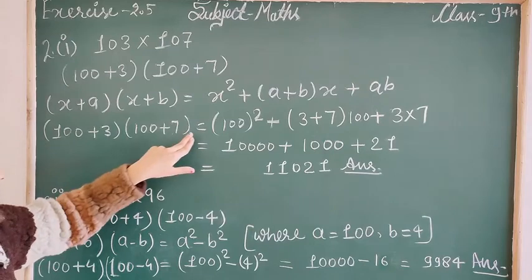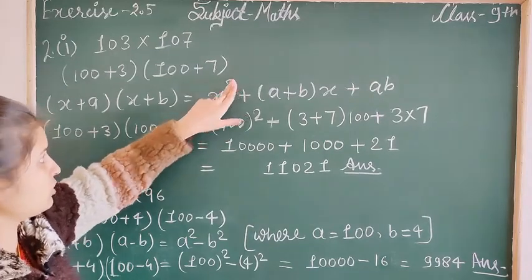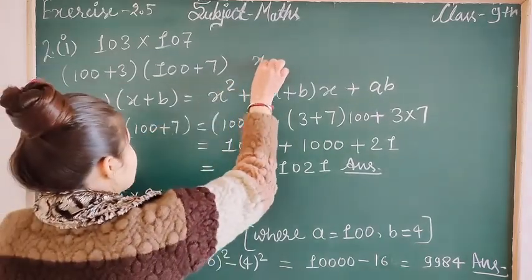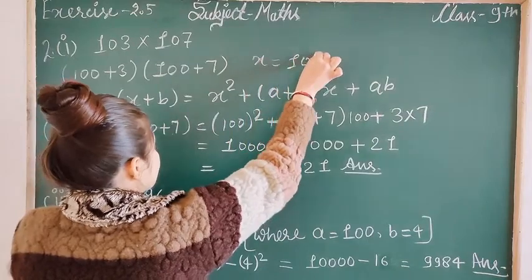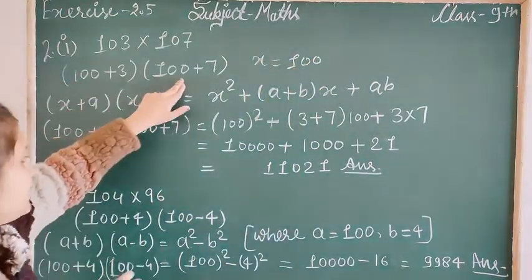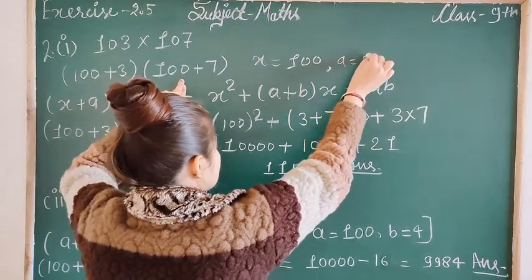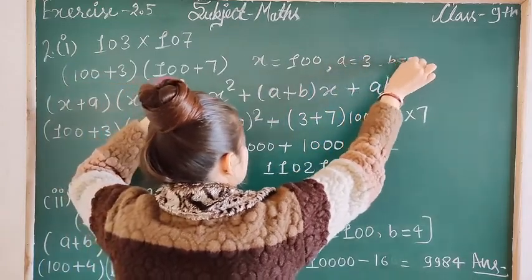(100+3)(100+7) equals our formula. Here x=100, a=3, and b=7.